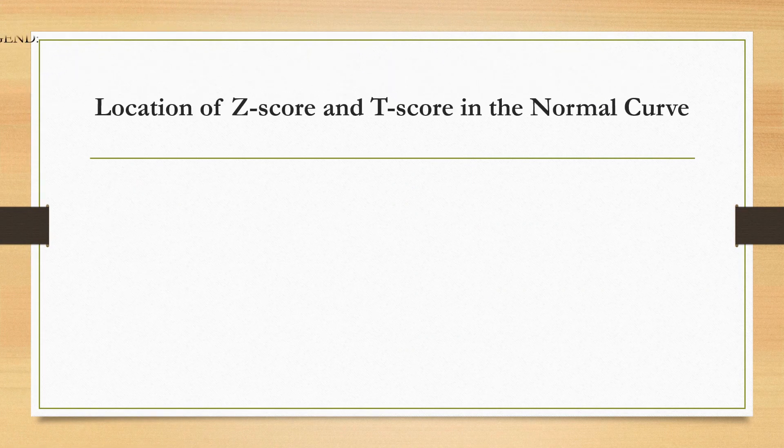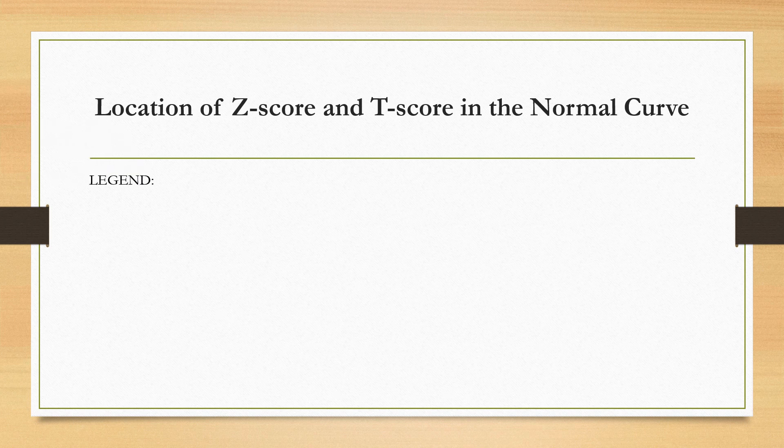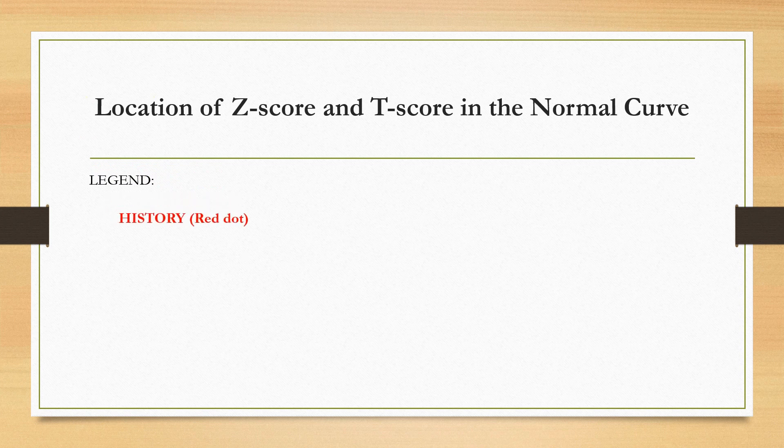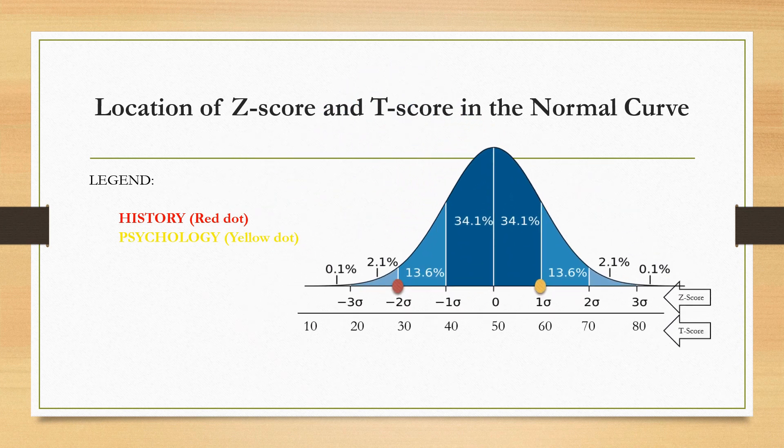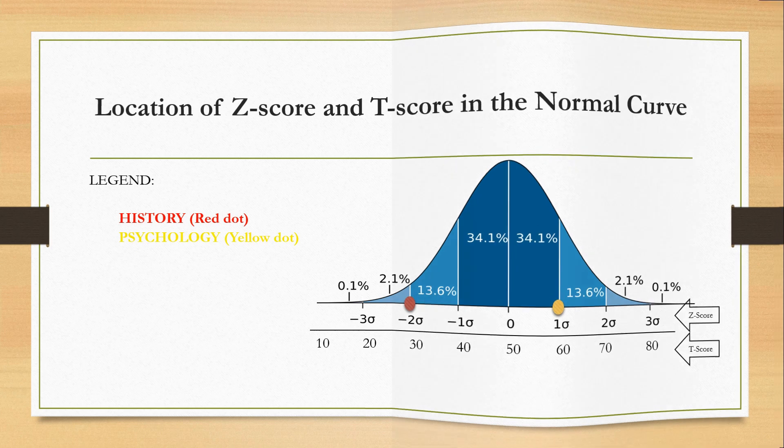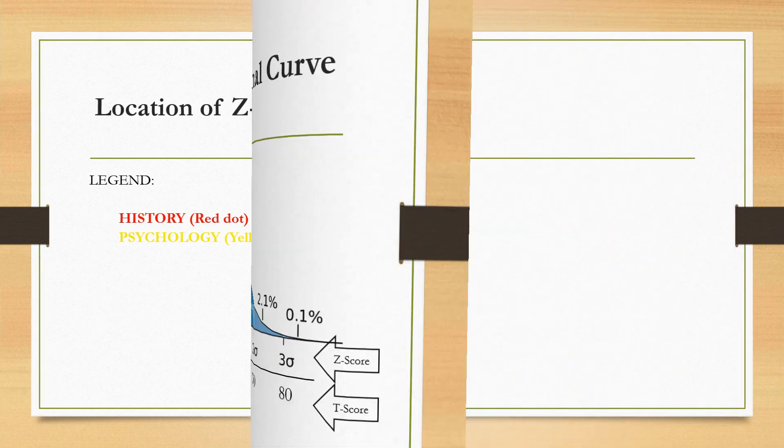Now, let's locate Z-score and T-score in the normal curve. We have here the legend. History is the red dot, and psychology is the yellow dot. Students, please pause and try to understand the graph or normal curve given.